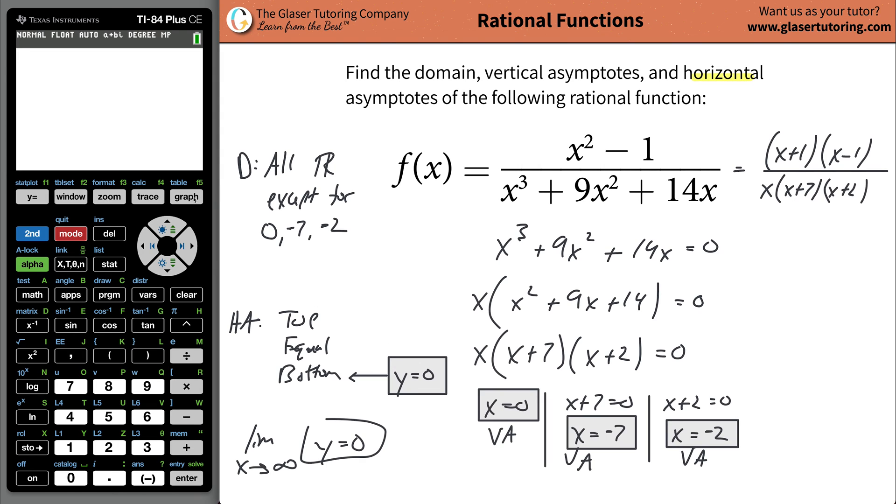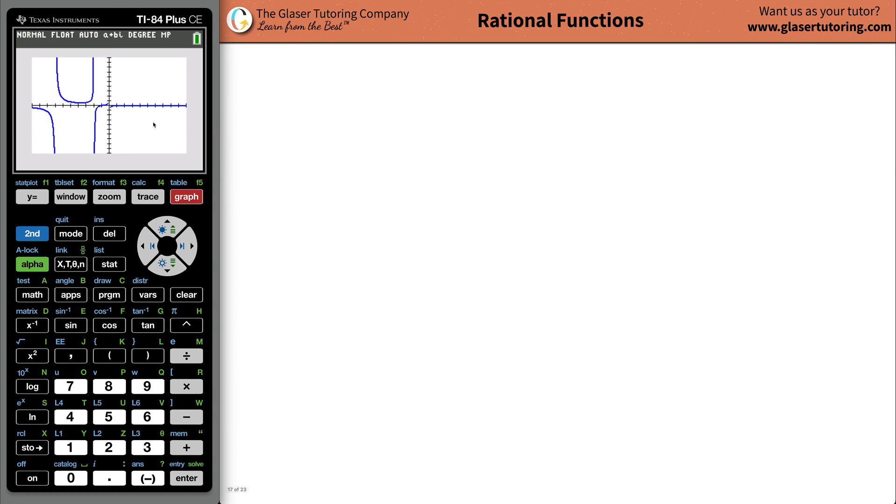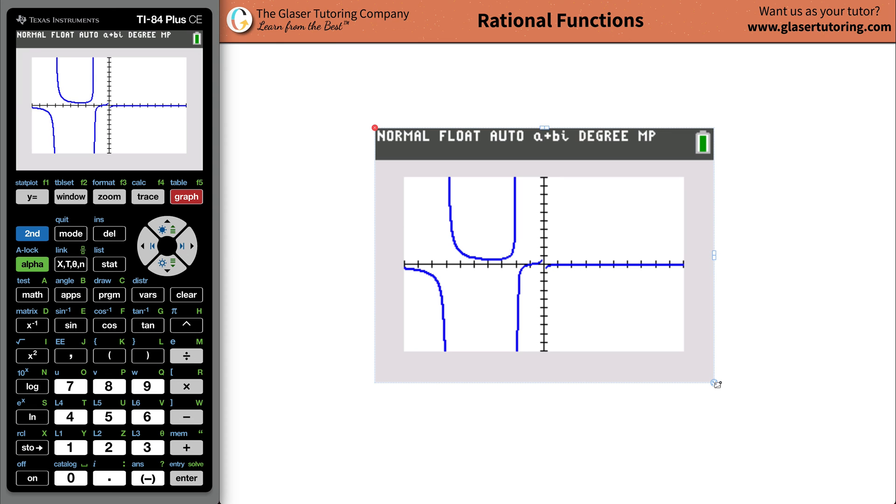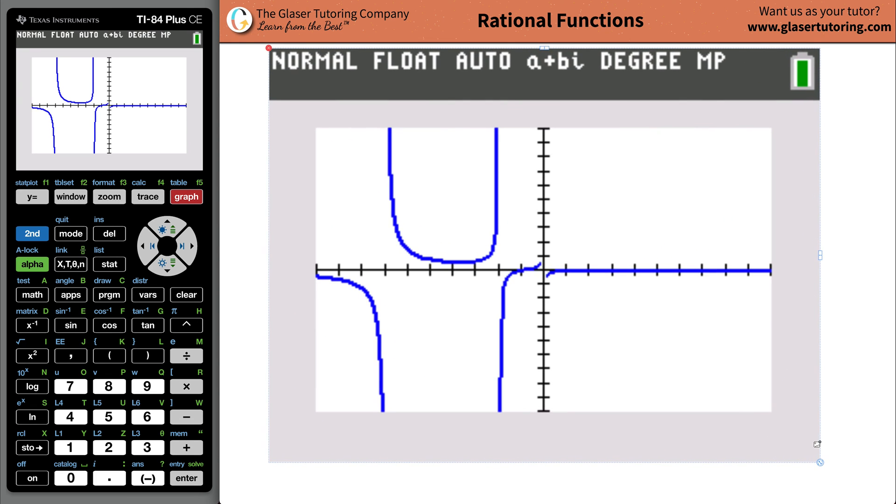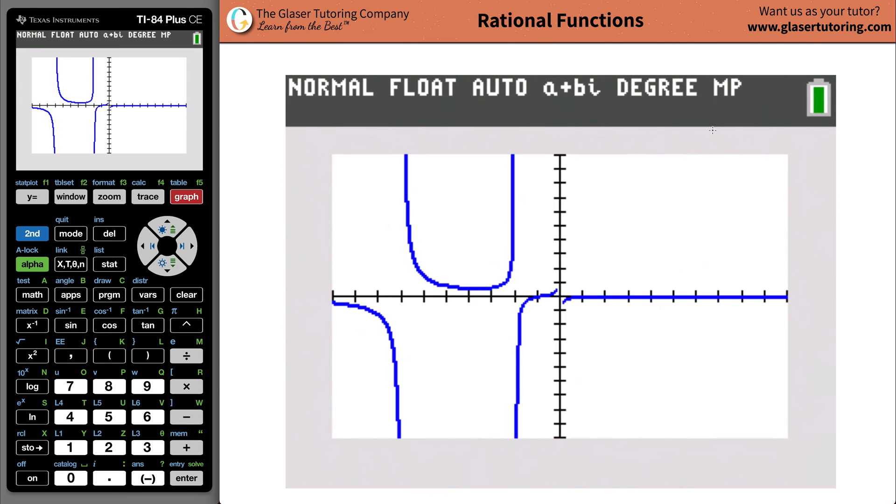Now, why don't we graph this? So hit graph, we already have the function in there, and look, look at this graph. So let's take this and maybe blow it up a little bit. Now, we said we have one horizontal asymptote, and it should be at y equaling zero, and I think we can definitely see that. We definitely have this horizontal asymptote y equals zero.